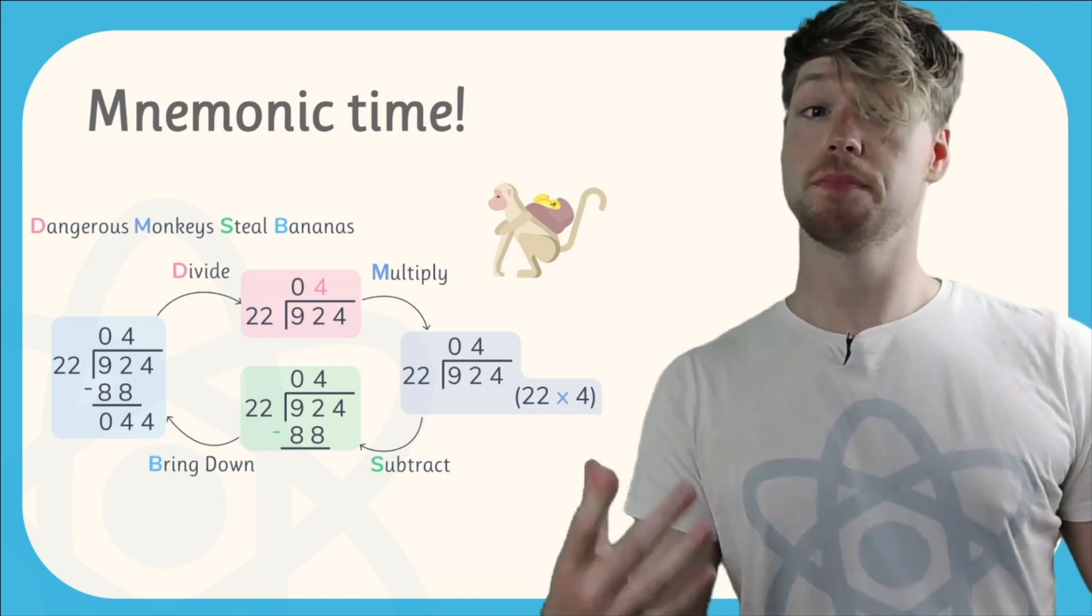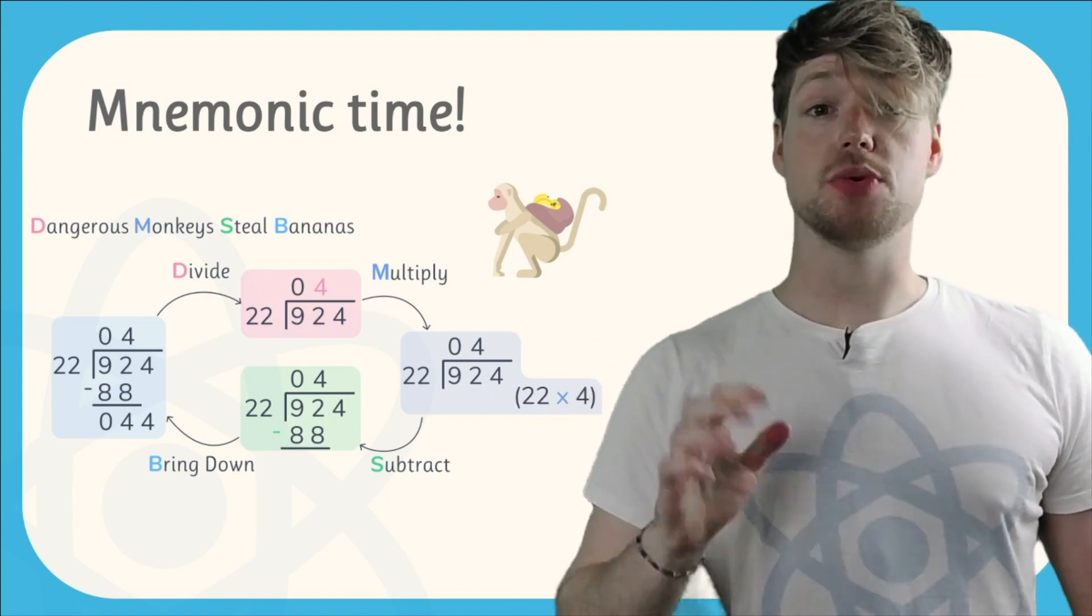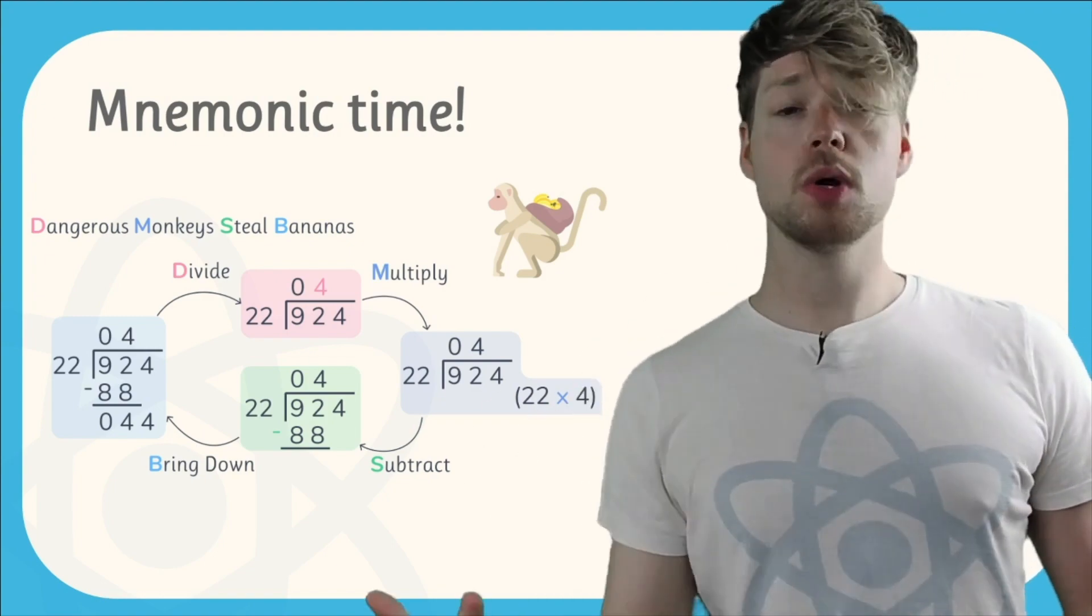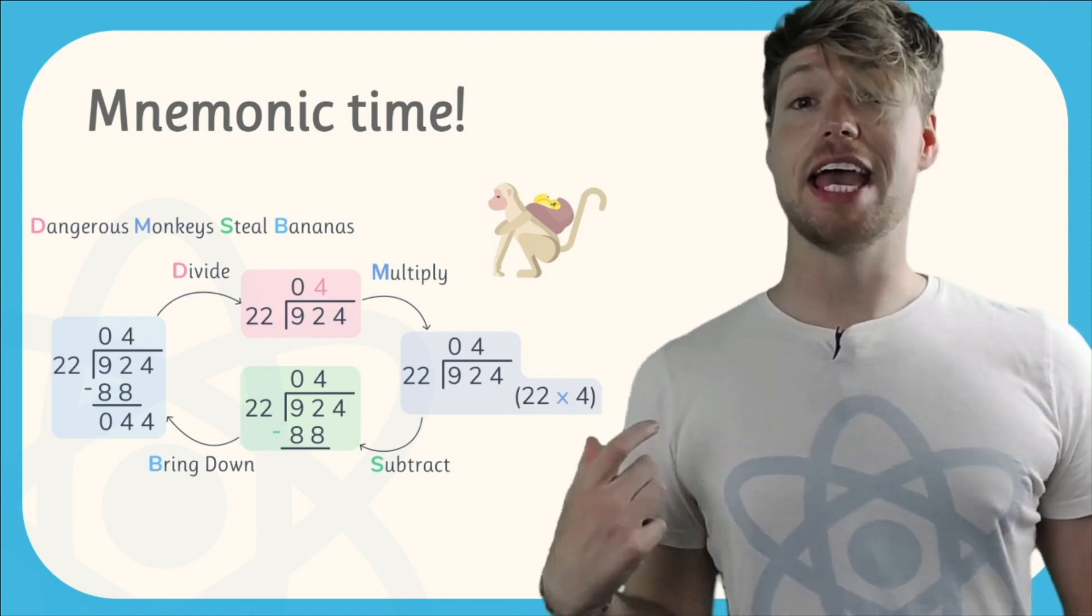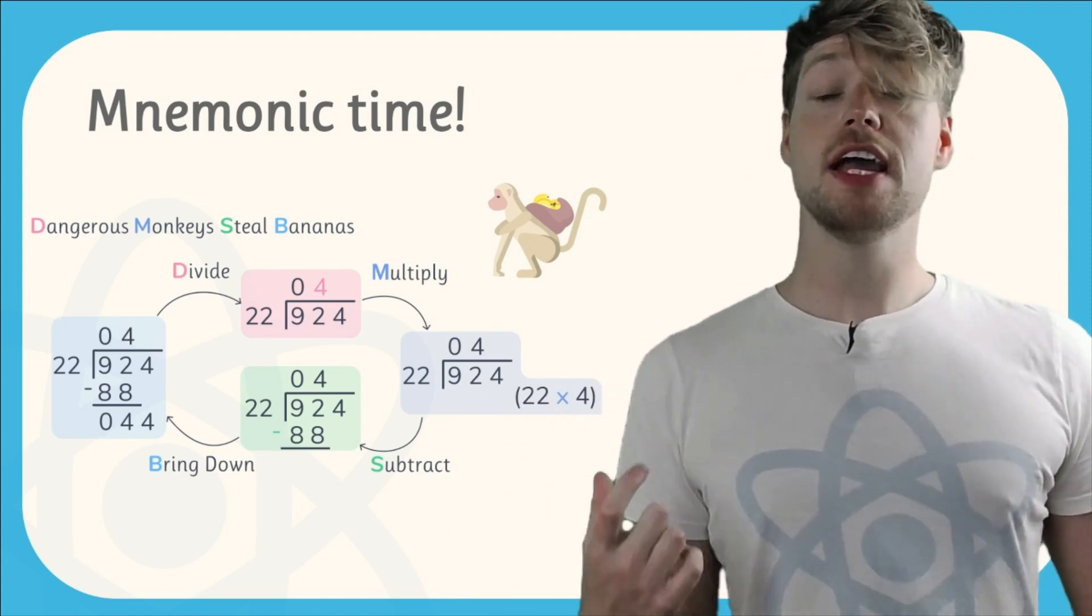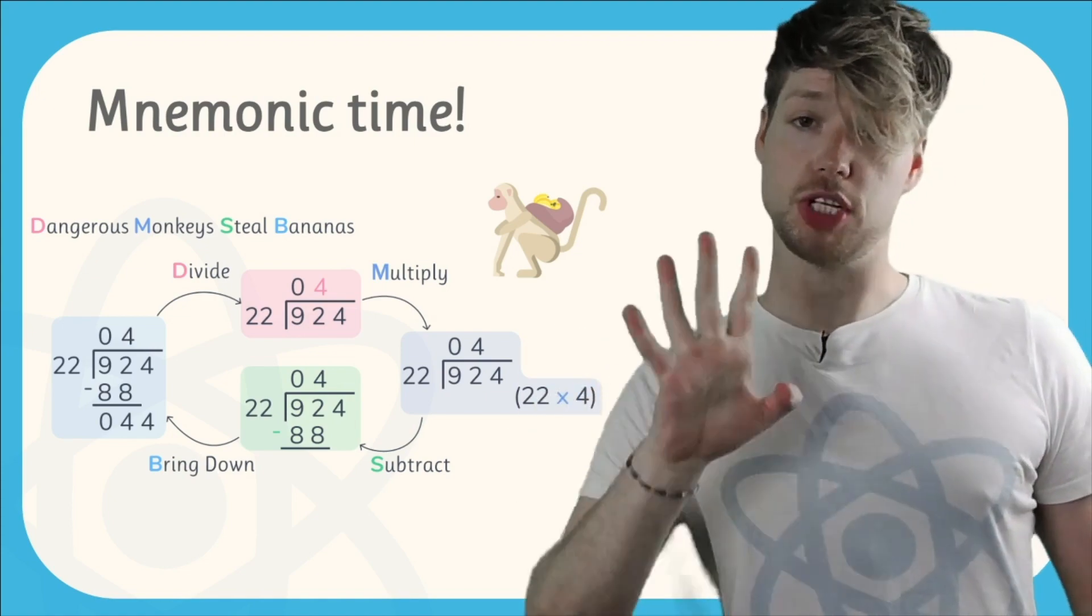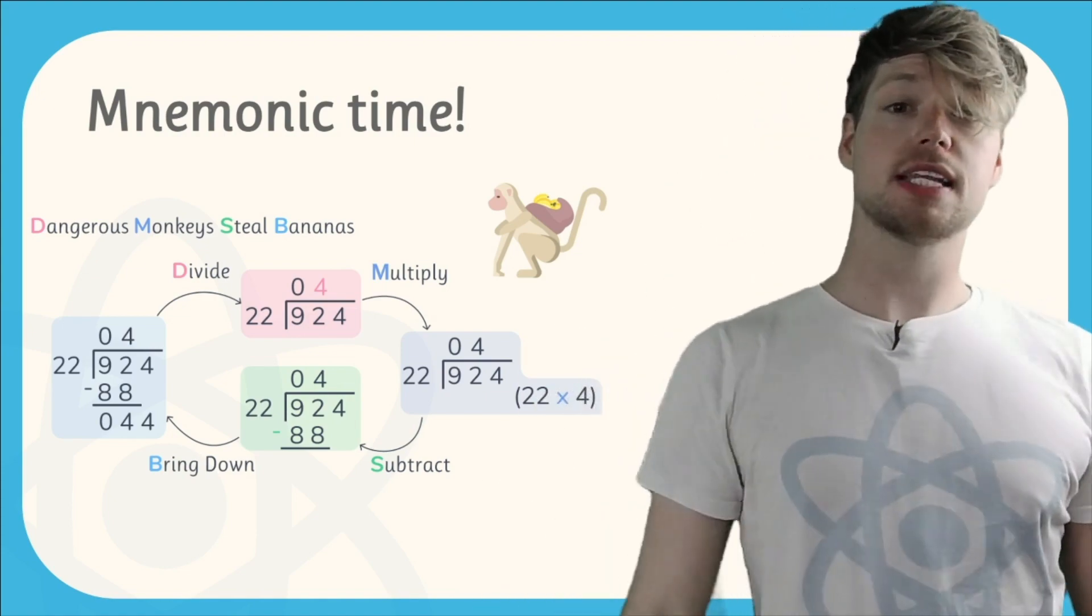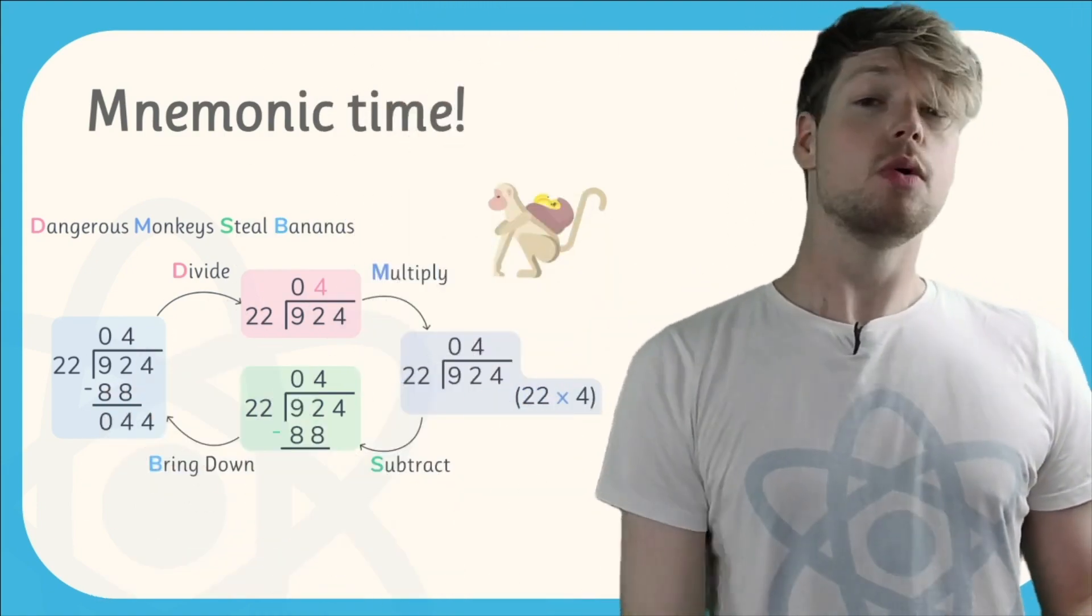22 goes into 92 four times. Once we've done that, we multiply that 4 by 22 to give us 88. We then do 92 subtract 88 to give us the remainder which is 4. The final step is then to bring down that 4 from the ones column to make 44.